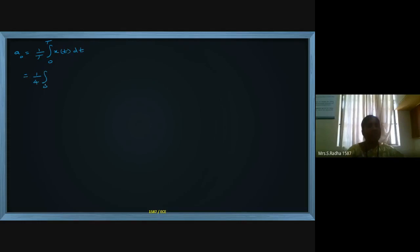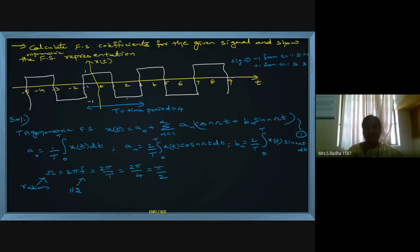For a₀: the formula is (1/T) ∫₀ᵀ x(t) dt. The time period is 4, so we integrate from 0 to 4. However, looking at the diagram, over one time period the signal spans minus 1 to plus 3, so I will take the integration limits as minus 1 to plus 3.